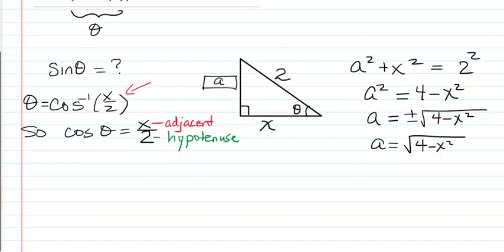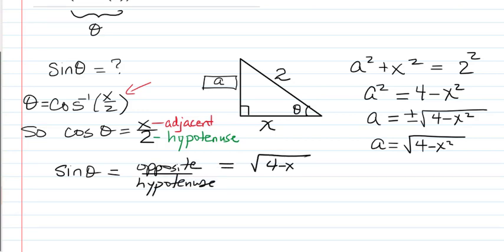And then we're going to have the sine of theta is going to be the opposite over the hypotenuse, which is going to be square root of 4 minus x squared over 2.